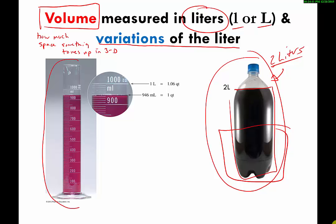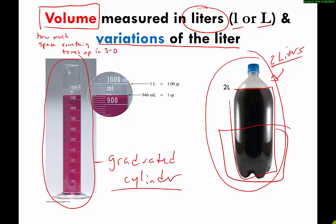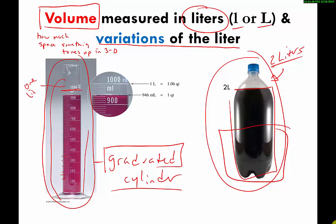This device is called a graduated cylinder — it's basically a tube, and 'graduated' means it has little markings where you can make readings. It's a standard lab device used to measure how much space liquids take up in three dimensions. The line marked 1000 here is equal to one liter. This purple liquid is taking up almost one liter — it reads 950, which we call milliliters. We'll talk about that in a minute.